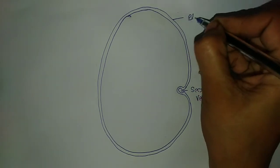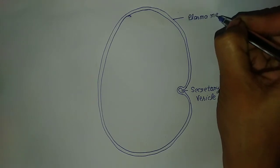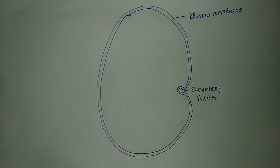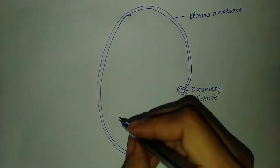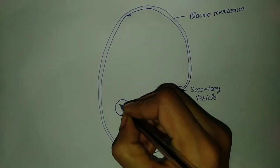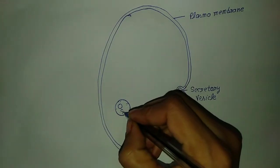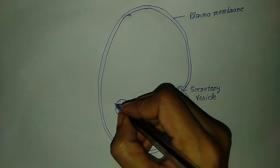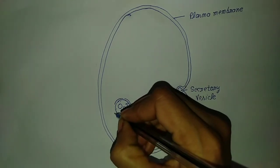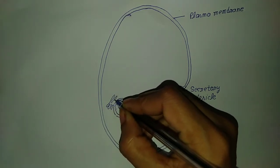This is called the plasma membrane. The animal cell has a membrane, and the plant cell has a cell wall. This is the structure of animal cells. This is called the plasma membrane, and this is the nucleus. The nucleus is well developed in the eukaryotic cell.